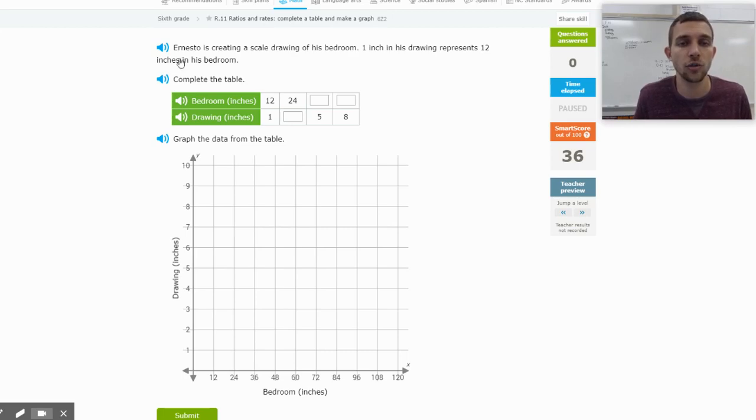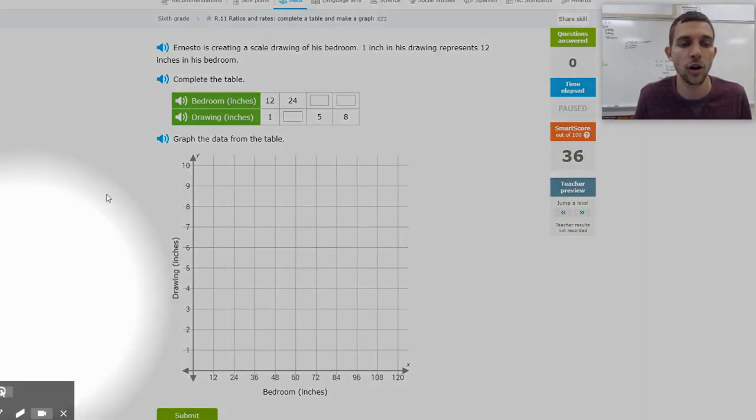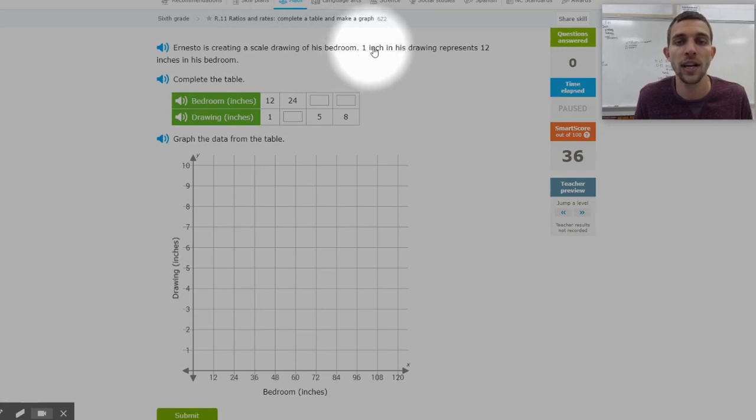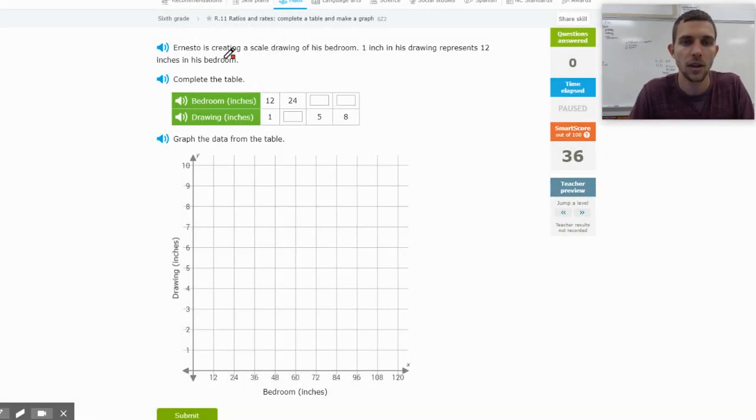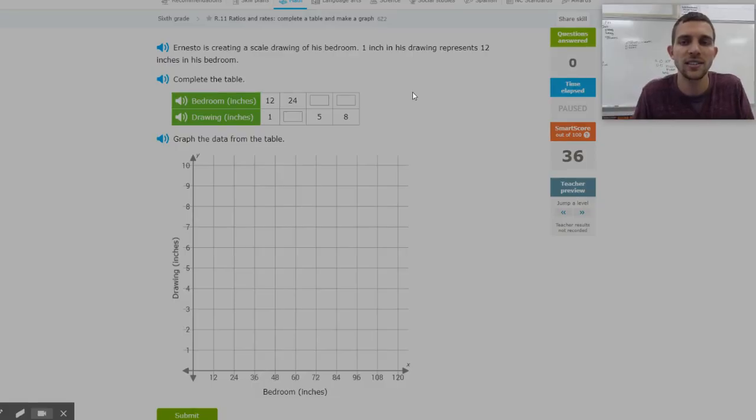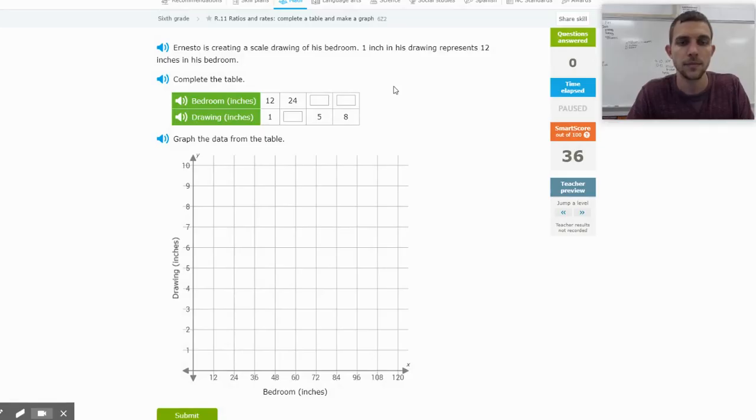We can see our first problem and it says, Ernesto is creating a scale drawing of his bedroom. One inch in his drawing represents 12 inches in his bedroom. From here then, we need to figure out what exactly are we doing. I'm going to zoom in and use the pen to solve the problem in the table, and then we are going to transfer the table to the graph.